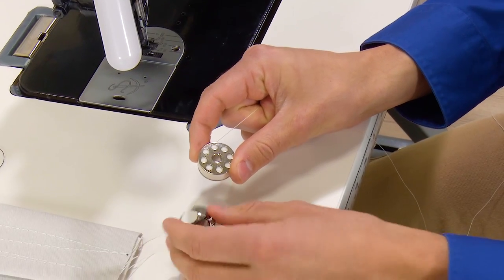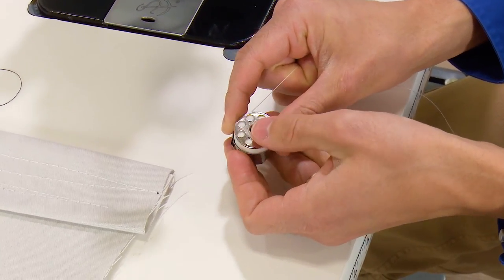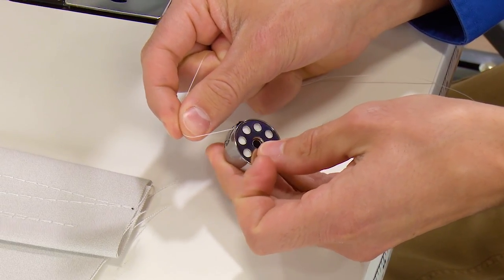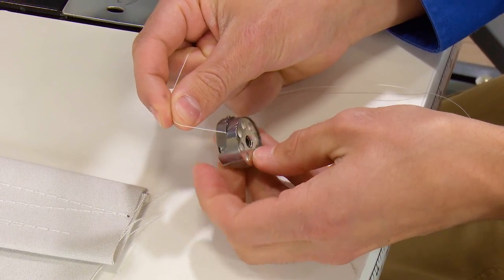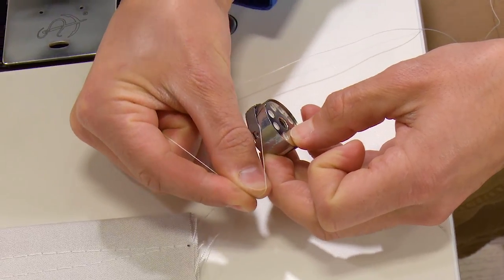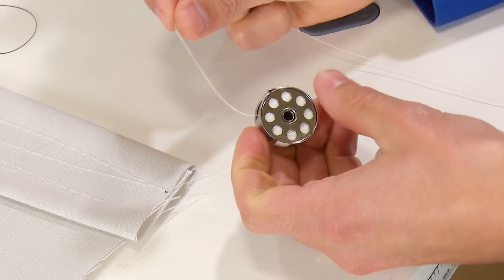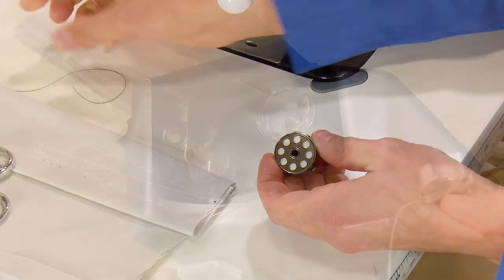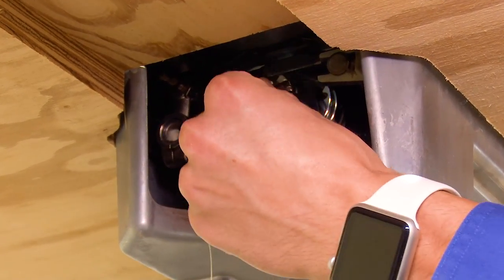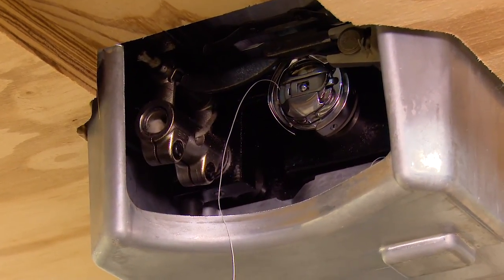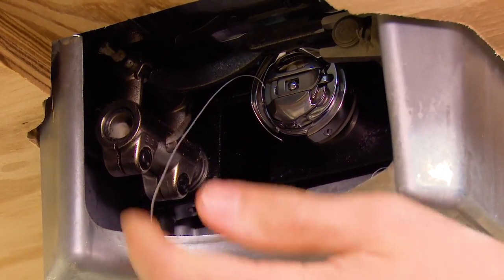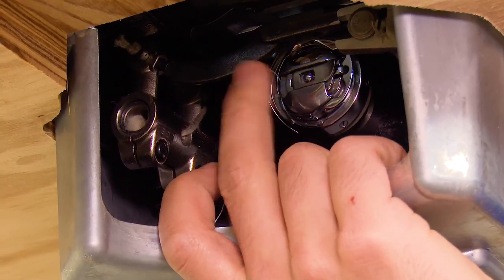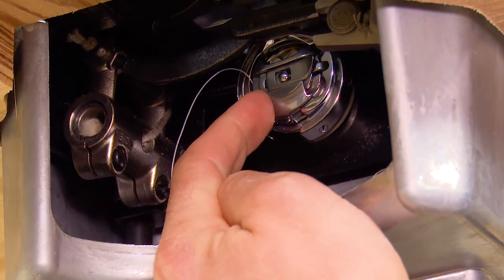The bobbin should be inserted so that when the thread is pulled on the bobbin spins clockwise. Insert the wound bobbin into the bobbin case. The thread tail should remain outside of the case and be passed through the slot in the side of the bobbin case. Pull the thread under the tension spring. Now if you pull on the thread the bobbin should turn clockwise. If it is not, take it out and flip it over. To install the bobbin case lift and hold the spring loaded lever and push the case into the axle of the shuttle assembly. Be sure the bobbin case is seated appropriately and locked in position. Use your finger and jiggle the bobbin case around to be sure it is locked and seated appropriately.